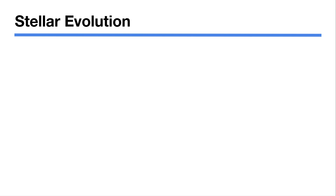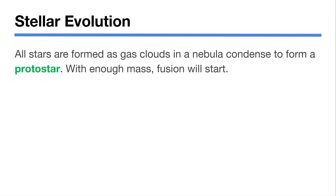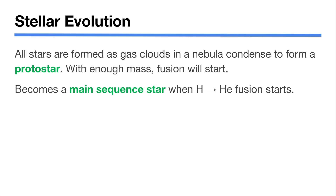All stars start the same way — from nebulae, which are giant enormous clouds of gas throughout space. A slightly denser section of the gas cloud starts to condense, and if there's enough mass, the gas coalesces into a big ball. That ball squeezes its interior so hard that it starts to fuse hydrogen into helium. While forming from the nebula it's called a protostar, and once fusion starts it becomes a main sequence star. Main sequence is defined as when the star is fusing hydrogen to helium.